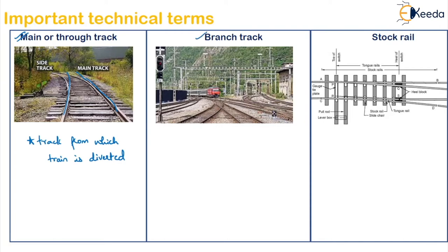Next is the branch track. If you observe in this figure, the side track is your branch track. From the main track, this is the track on which the train is diverted.